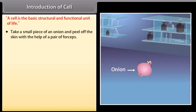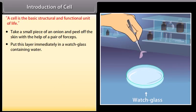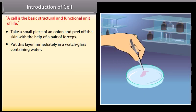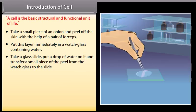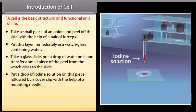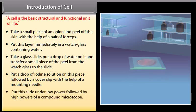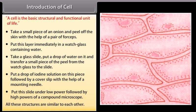Experiment: Take a small piece of an onion and peel off the skin with the help of a pair of forceps. Put this layer immediately in a watch glass containing water. Take a glass slide, put a drop of water on it and transfer a small piece of the peel to the slide. Put a drop of iodine solution on this piece followed by a cover slip. Put this slide under low power followed by high powers of a compound microscope. All these structures are similar to each other.